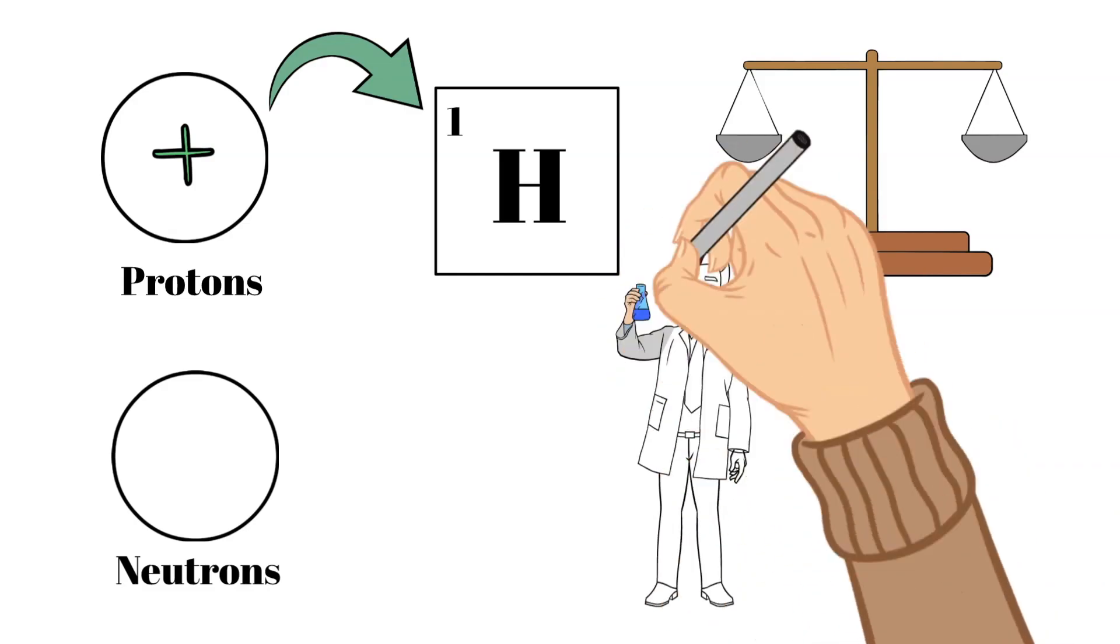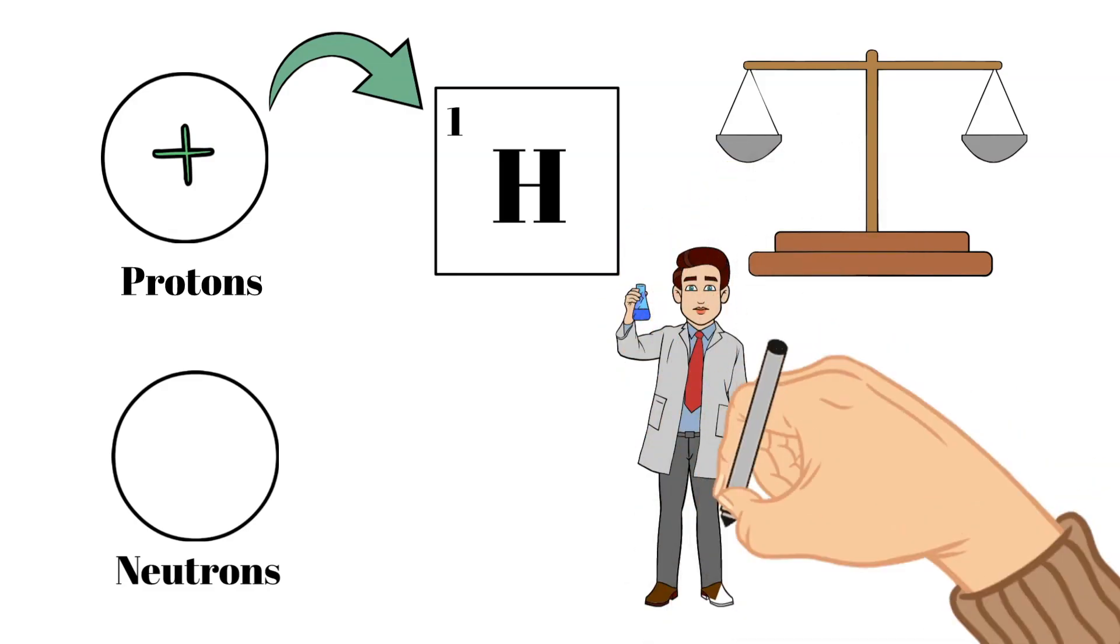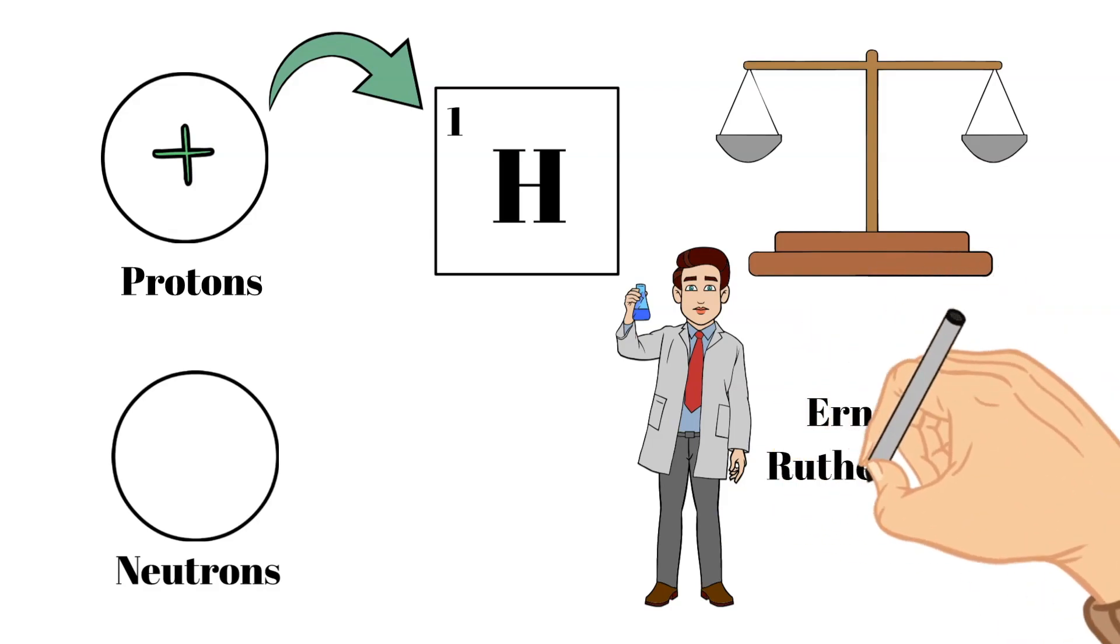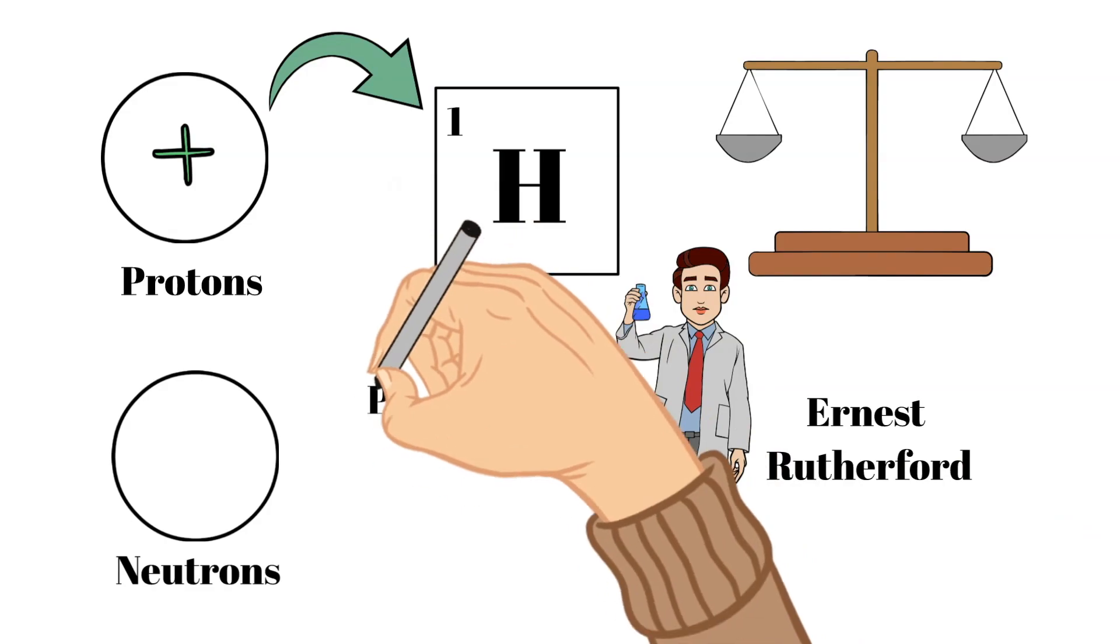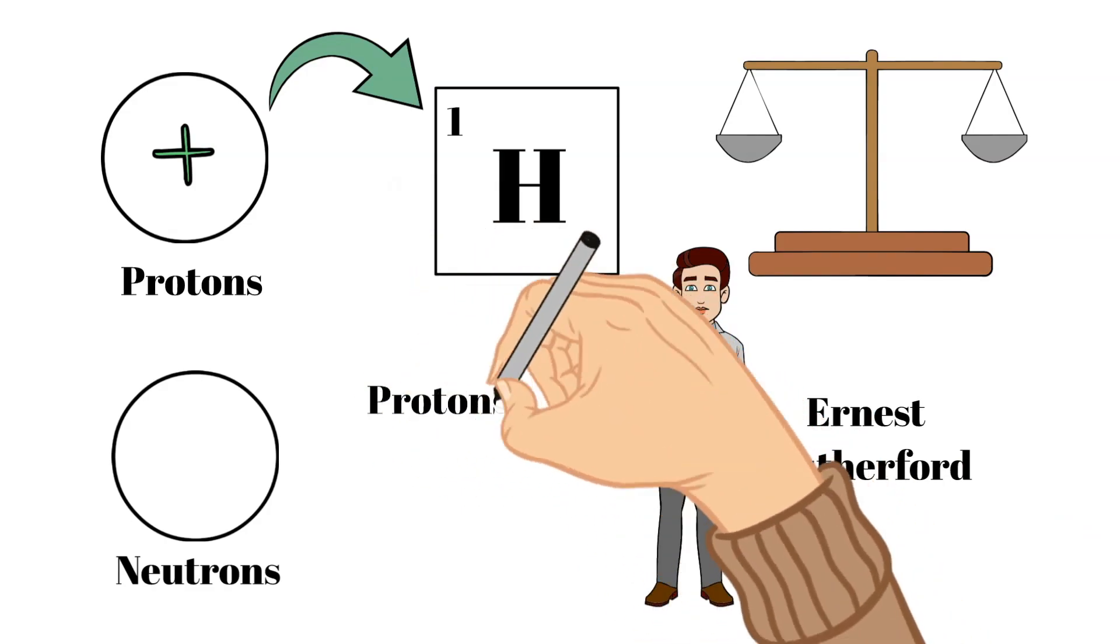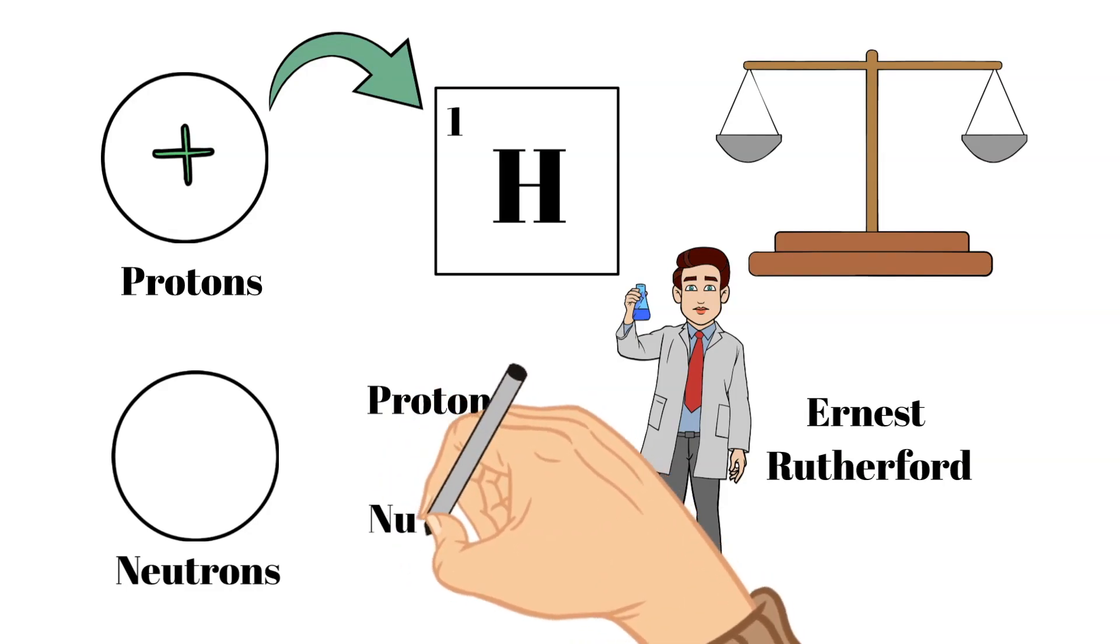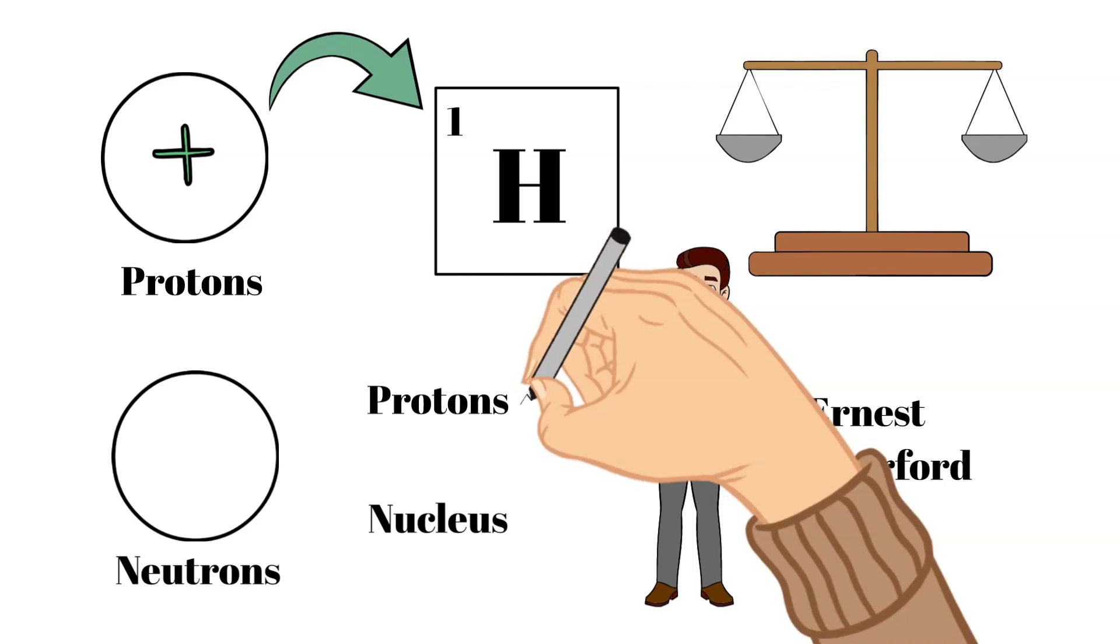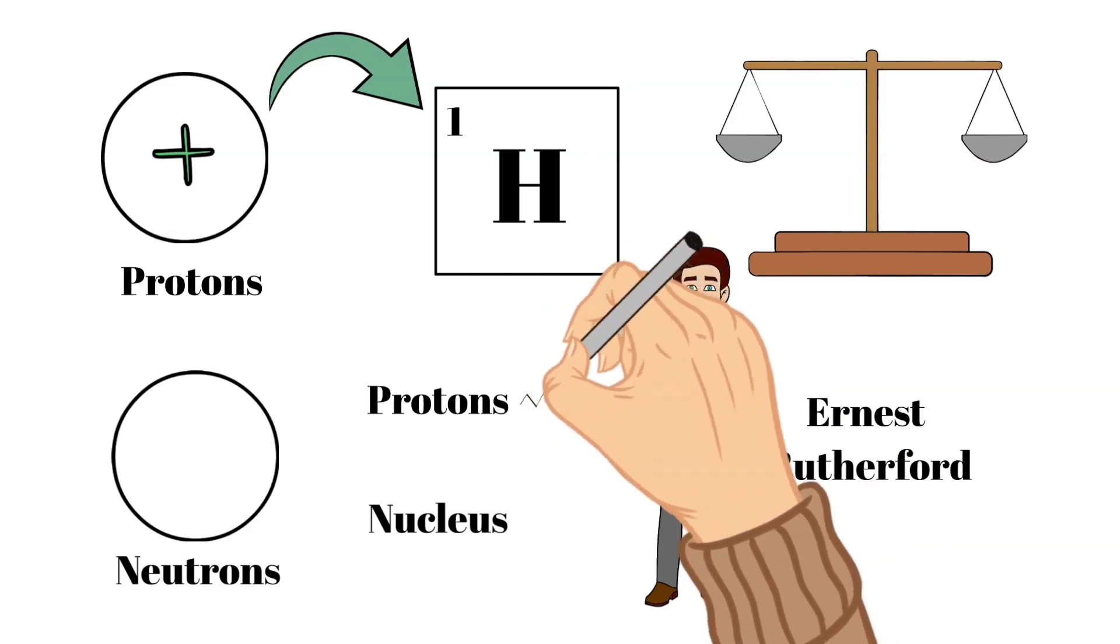Protons were discovered by a physicist named Ernest Rutherford, and he made this discovery in 1920. Rutherford is known today as the father of nuclear physics, as he not only discovered that protons exist, but he was also the one who proved that atoms have a nucleus.